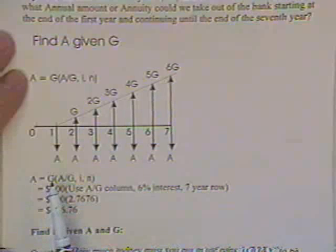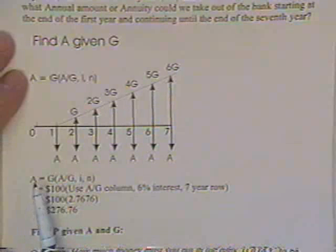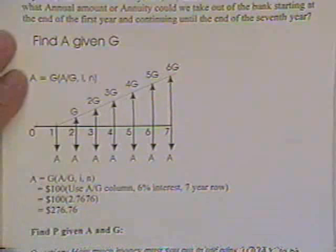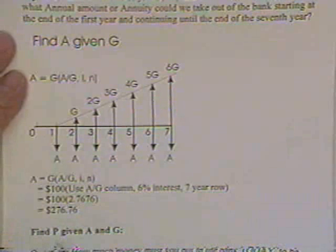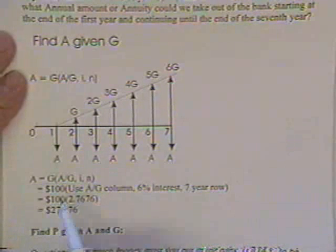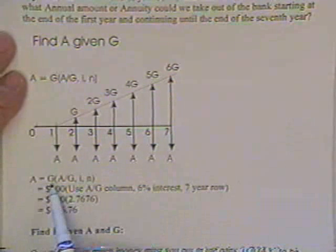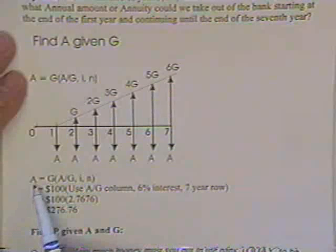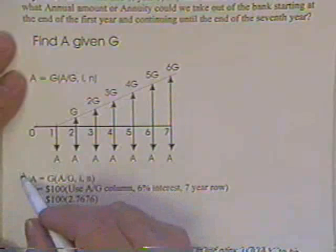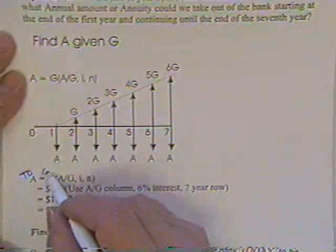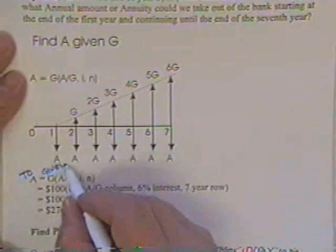Given G, find A, or as the reference manual uses it, 2A to 2G to 2A given G, that's the way our book uses it, 2A given G.